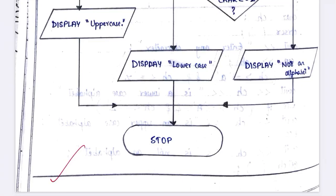This is about the algorithm and flowchart of checking whether a character is uppercase or lowercase — your fifth lab program. If you like this video, please hit a like and share it with your friends. Please subscribe my channel, and if you need any algorithm and flowchart for any program, just leave the question in the comment box and I will upload it in the next video. Thank you.